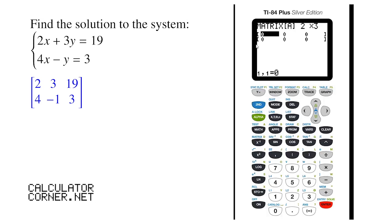The calculator changes the size of the matrix automatically. Now we need to enter the elements of this matrix. So that would be 2, 3, 19.